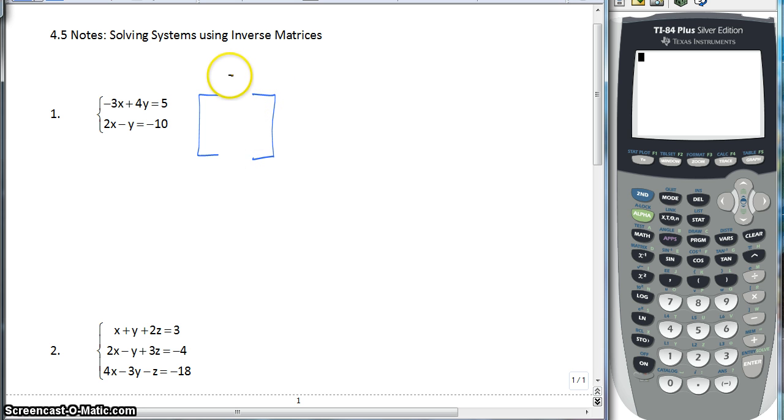The first one we're going to call matrix A, and that is going to be our coefficient matrix. So we're just going to use the coefficients of X and Y. Of course, you need them in the right order. So we're going to have a negative 3, 4, 2, and negative 1 times.